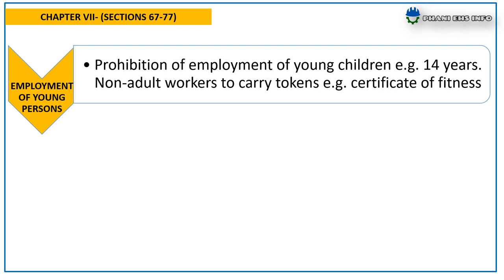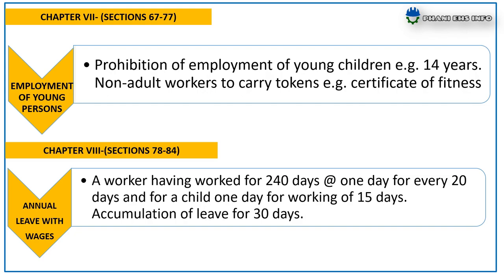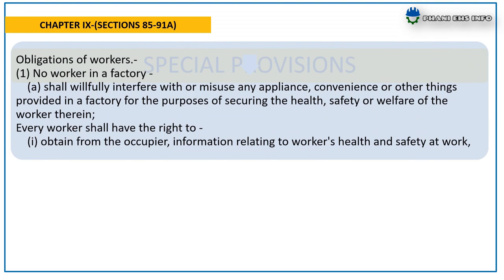Chapter 7, Employment of Young Persons, covers sections 67 to 77, including the prohibition of employment of children under 14 years, and non-adult workers to carry tokens such as a certificate of fitness. Chapter 8, Annual Leave with Wages, covers sections 78 to 84. A worker having worked for 240 days is entitled to one day for every 20 days worked, and for a child one day for every 15 days worked, with accumulation of leave up to 30 days.